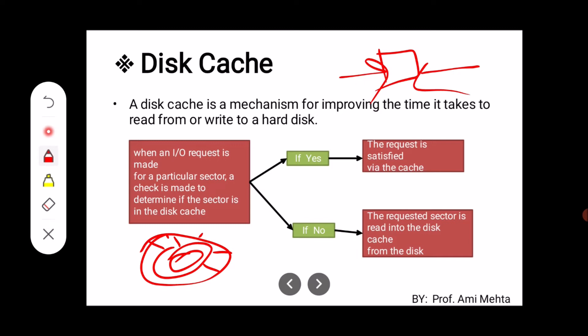When an IO request is made for a particular sector, a check is made to determine if the sector is in the disk cache. Disk cache is a particular memory portion. If this sector data is stored in that memory portion, the request is satisfied via the disk cache.